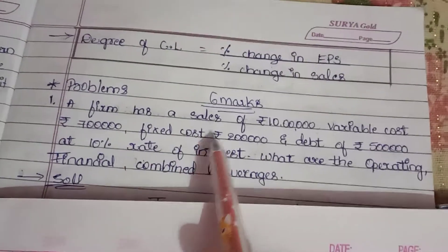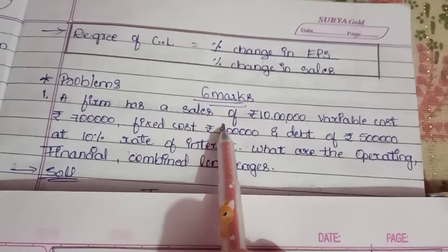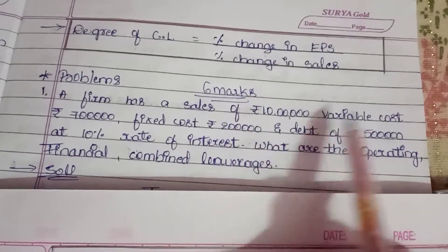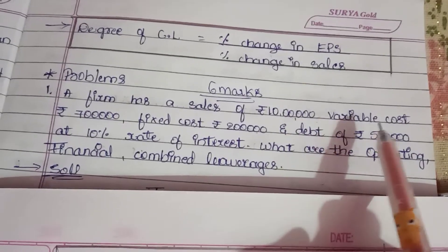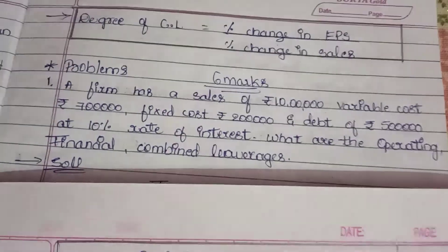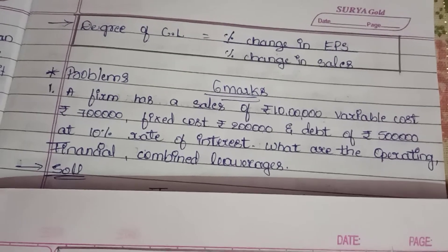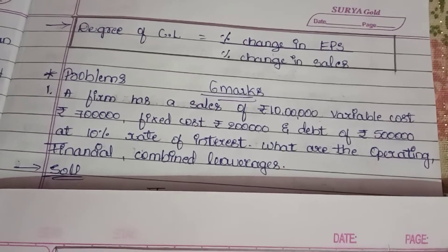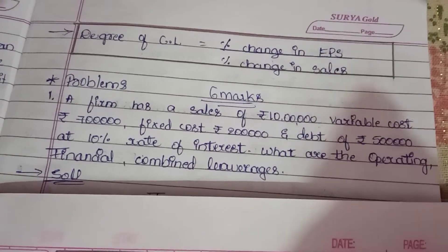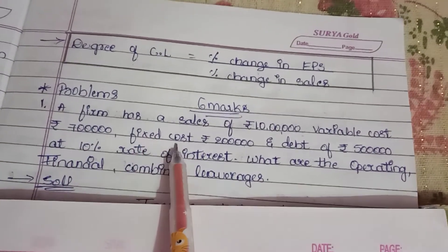First problem. A company has sales of 10 lakhs. The variable cost is 7 lakhs. Next is fixed cost.